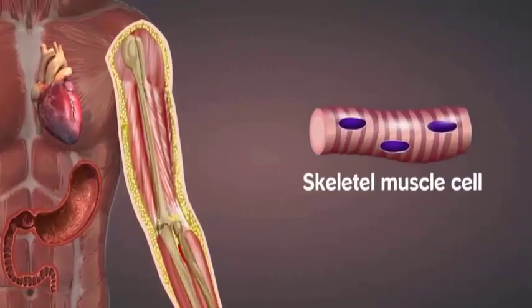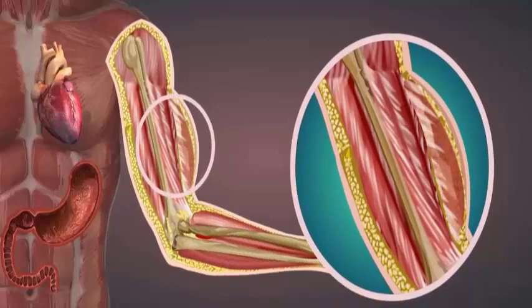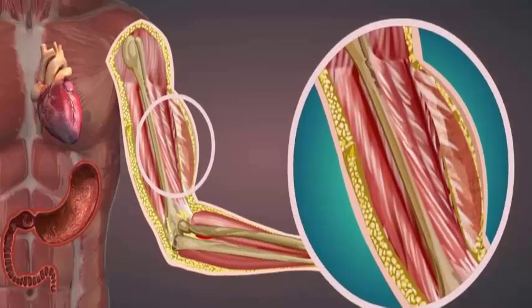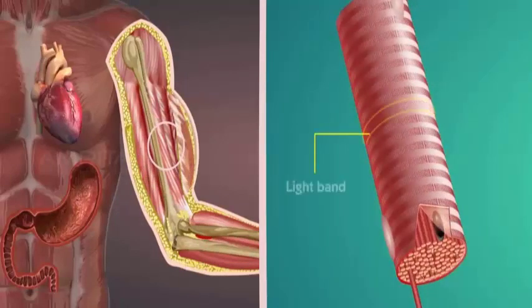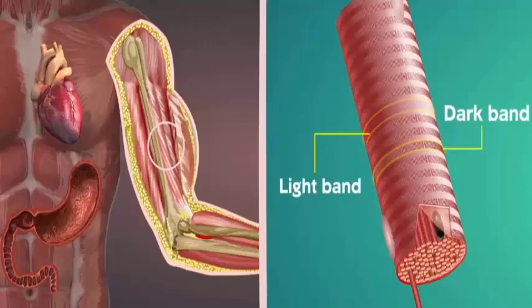The skeletal muscle helps in locomotion and other voluntary body movements. It is made of long fibers with alternate light and dark bands or striations, so skeletal muscles are also called striated muscles.